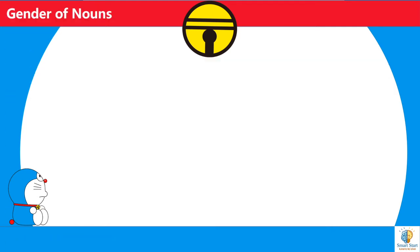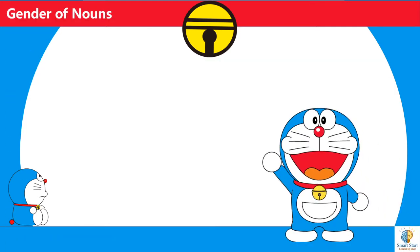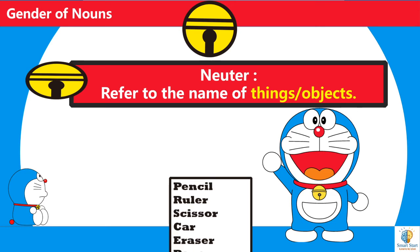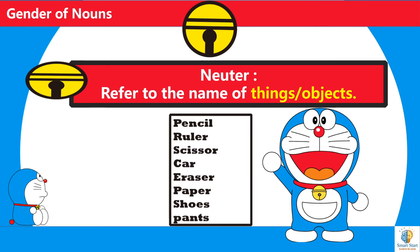Neuter refers to the name of a thing or object. For example: pencil, ruler, scissor, car, eraser, paper, shoes, and pants.